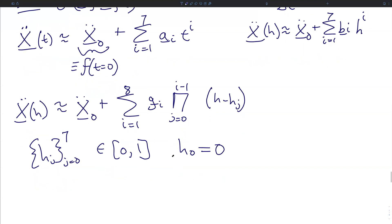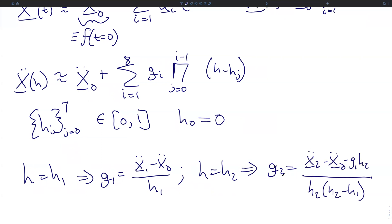So for example, if we have h equal to h1, then the g1 vector must be x double dot 1 minus x double dot not divided by h1. If we have h equal to h2, then the g2 vector will be x double dot 2 minus x double dot not minus g1 h2, this value here, divided by the product of h2 with h2 minus h1, and so on and so forth. And in here, we have used the shorthand x sub i double dot is equivalent to x double dot evaluated at the sub step h sub i.